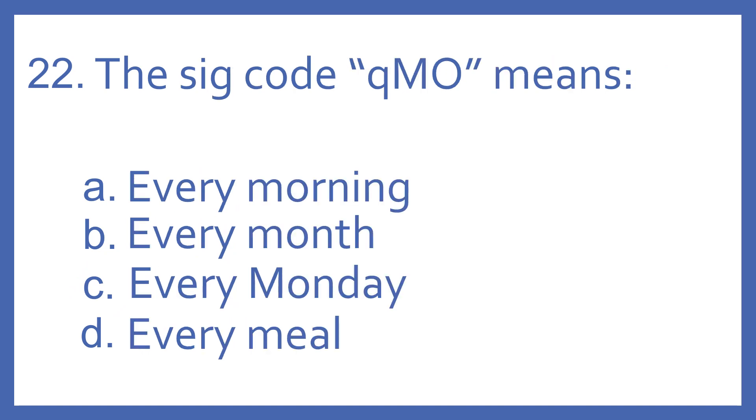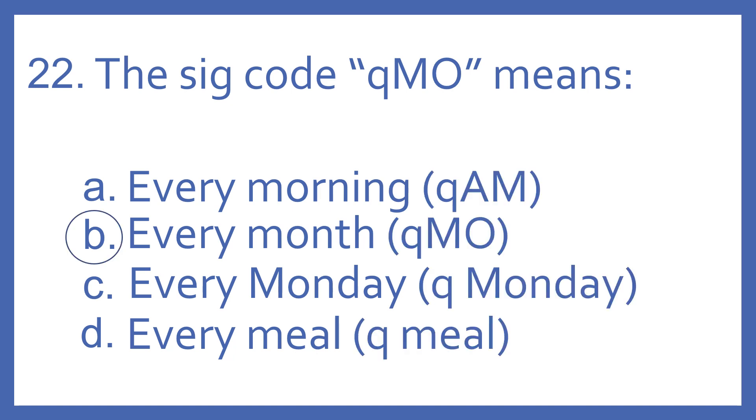Number 22, the SIG code QMO means A, every morning, B, every month, C, every Monday, or D, every meal. And the answer is B, every month. QMO means every month. Every morning would be QAM. Every Monday would just be Q Monday. And every meal would be Q meal. Q means every.